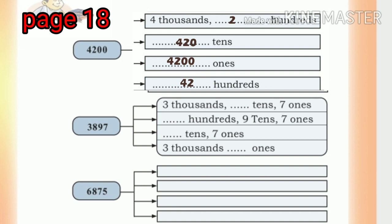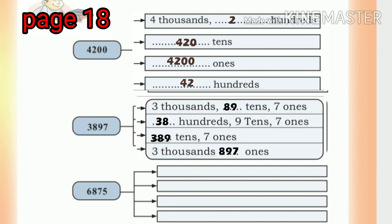Same way, 3,897 is three thousands, eighty-nine tens, seven ones. Or 3,897 ones.